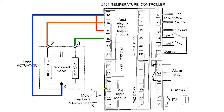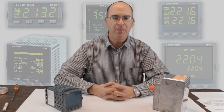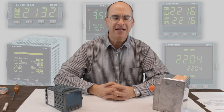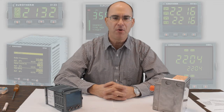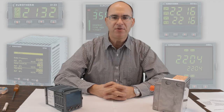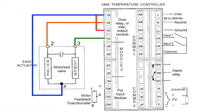As an option, a slide wire potentiometer input module can be installed in the temperature controller to measure the slide wire feedback position of the motorized valve actuator. To use this option, wire terminal 3B of the temperature controller to terminal 7 of the motorized valve actuator.